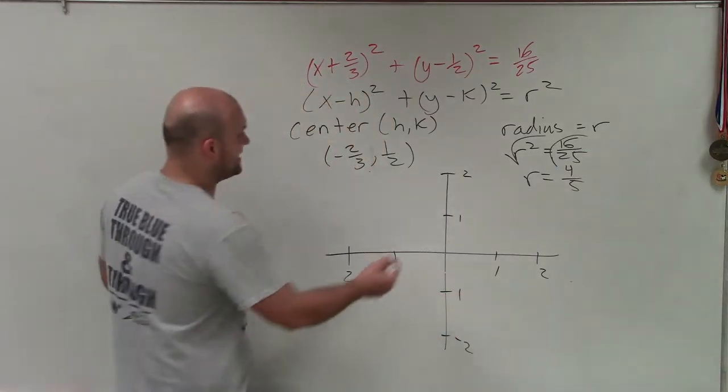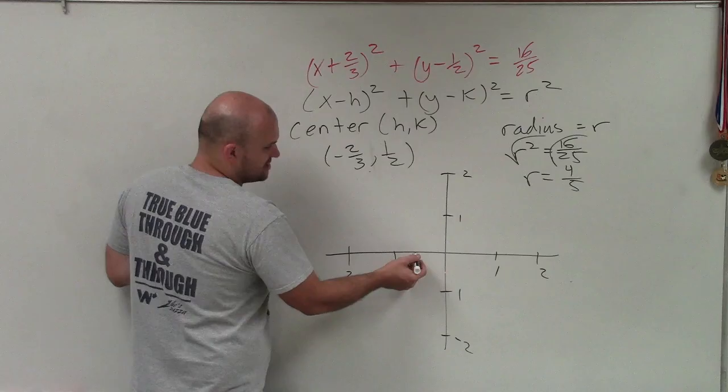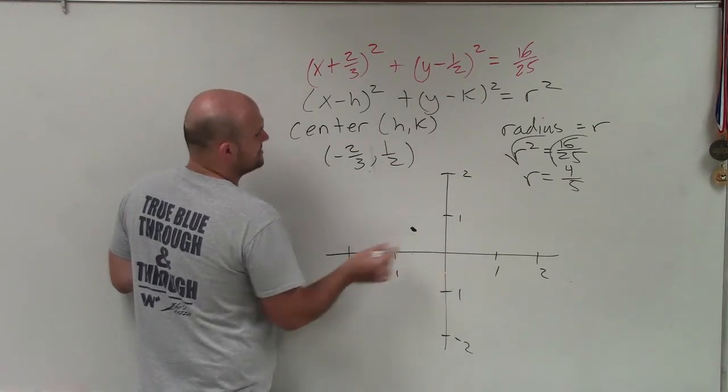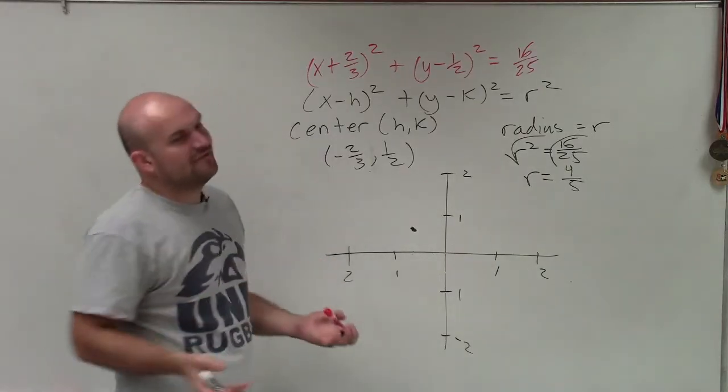My center is at negative 2 thirds, which is like 0.666 repeating, right? So it's going to be like here and then up 1 half. So that's my center.